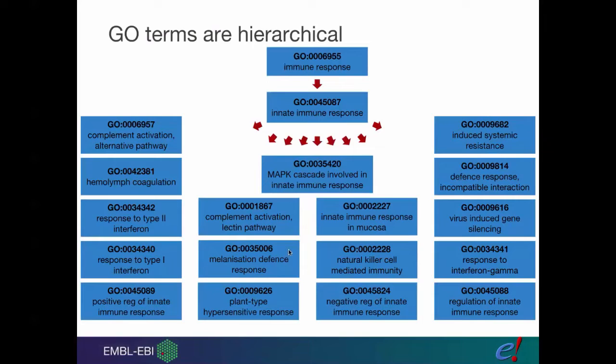It makes it very searchable. Ensembl shows the GO terms attached to the genes, so you can go back the other way as well. You can go from a gene to GO terms and find out what the gene does, but you can go from a GO term to genes and find out all the genes that do that thing.